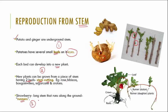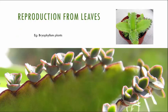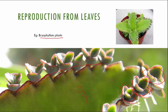Let's move on to the next method — reproduction from leaves. We will take the example of the plant called bryophyllum. The bryophyllum plant has a very thick leaf, and on the edges of the leaves it has very tiny plantlets or new plants that grow from them. These are called buds. When this leaf dries and falls onto soil, they all start growing into new plants. This is the method of reproduction from leaves.